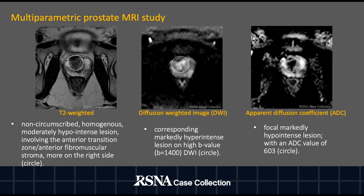Here we have axial images at the mid gland level from a multi-parametric MRI of the prostate. This is a good way to view those images by linking the axial T2 weighted, high B value diffusion weighted, and apparent diffusion coefficient or ADC map in adjacent windows.